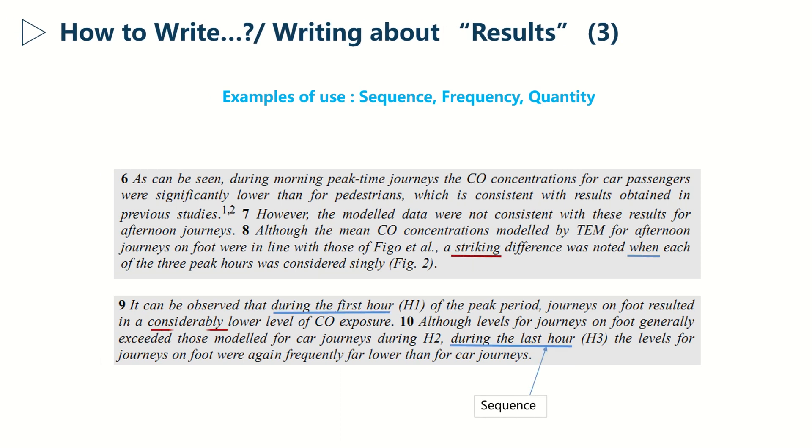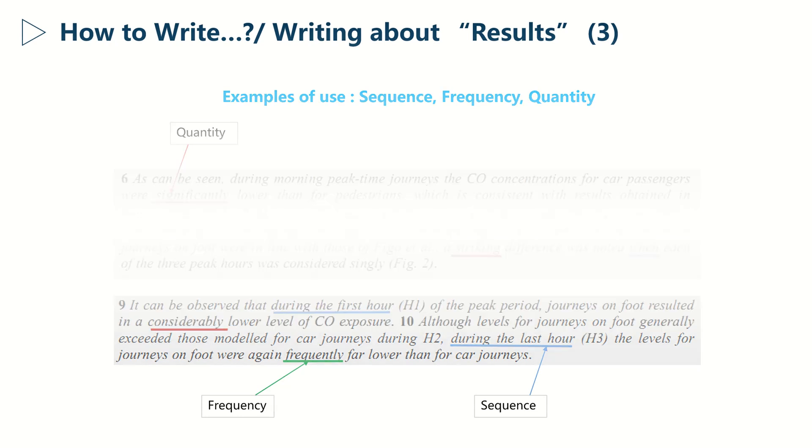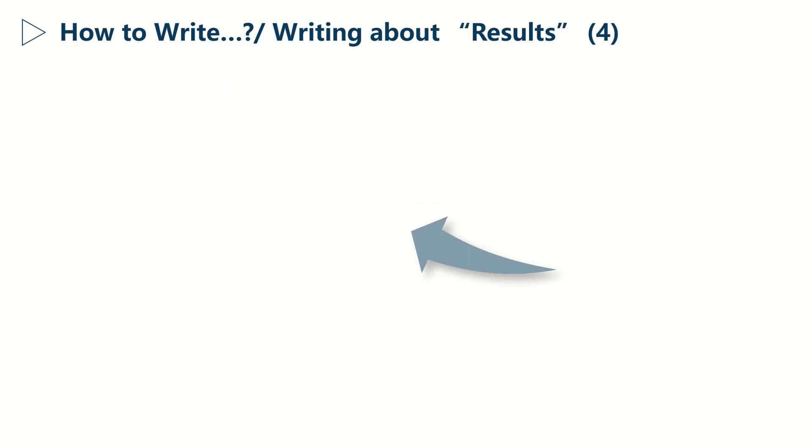Underlined in red you have some expressions that telegraph quantity. Similarly, in blue we have some expressions that communicate sequence, while in green we have a word used to express frequency. Basically this is how it works. Just spend a few more minutes on this example—it's quite easy to understand.